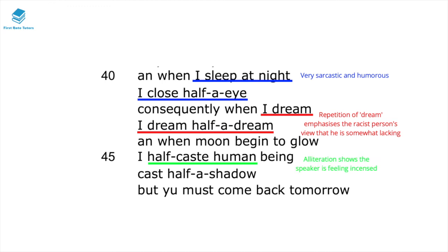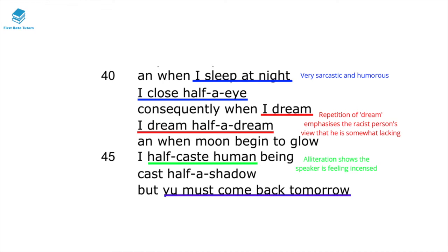In line 45, he says 'I half-caste human being' — the alliteration here shows the speaker is really incensed. He then states 'you must come back tomorrow.' The imperative sentence shows that the narrator is taking back power and framing the narrative. Historically, racist labels have always taken power away from ethnic minorities, but this person who is mixed race is now taking back this power, saying: you come back tomorrow; I'll control this narrative and teach you what it means to be mixed race.